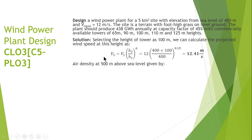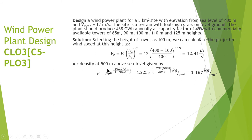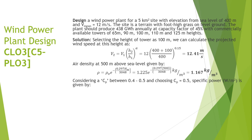Next, we calculate the air density at 500 meters above sea level. The formula is: density equals the sea-level density multiplied by e to the power of negative 0.297 times height in meters divided by 3048. Substituting h2 = 500 meters, the air density is calculated to be 1.167 kilograms per cubic meter.